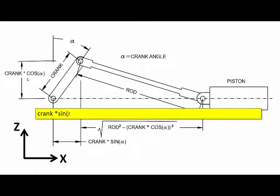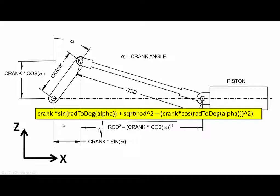From this we are going to write an expression for use in 3D Studio Max in the expression controller. That will be crank times the sine of alpha — since alpha is in radians, we need to use the function rad2degree to convert radians to degrees. We then add to that the square root of rod squared minus crank times the cosine of alpha. Again, we must convert alpha from radians to degrees.